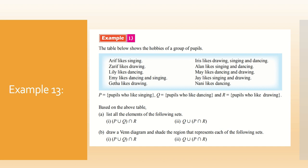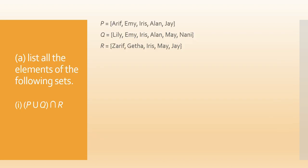Now we look at example 13 in your textbook, on page 116, about the hobby software group of pupils. Based on the table, you are asked to list all the elements of the following sets, complete two tasks, draw the Venn diagram, and check the region. We look at the first one: finding P union Q intersect R. P union Q is in a bracket, so we solve the bracket first, then from left to right.